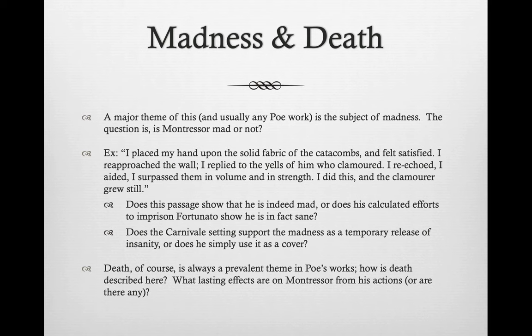Death is of course a very prominent theme in Poe's works. We look at how death is described here and think about the lasting effects on Montresor. Does he feel remorse? Does he feel haunted? He doesn't say — he simply says that 50 years pass and he never hears anything. We have this lingering idea of death, but it's shut off by the end of the story. The question returns: does Carnivale represent a release, or a cover for madness?